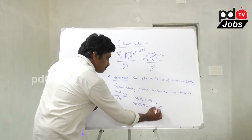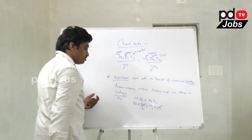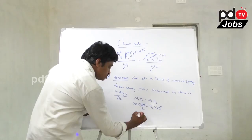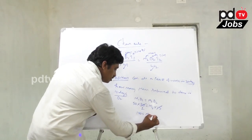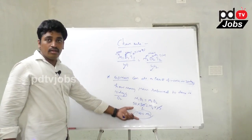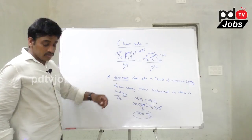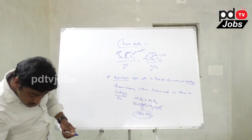15 and 30 cancel to give a factor of 2. So 50 into 2 is 100. Therefore, 100 men are required to complete the work in 15 days.